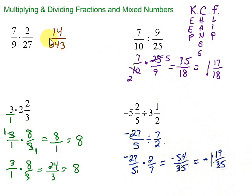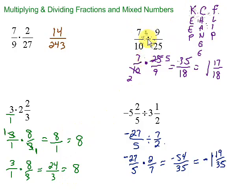Multiplying and dividing fractions: when we multiply, we simply multiply straight across. We can simplify before or after our multiplication — we'll end up in the same place. Division of fractions: three letters, KCF — keep, change, flip. Keep the first one, change the division to multiplication, and flip the second one. Then we just have a multiplication problem. Multiply across; you can simplify before or after. Doesn't matter. And off you go.